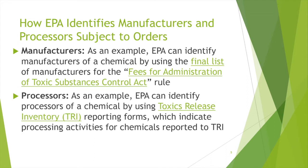For manufacturers, as an example, EPA can identify manufacturers of a chemical by using the final list of manufacturers for the Fees for Administration of Toxic Substances Control Act rule. For processors, as an example, EPA can identify processors of a chemical by using Toxics Release Inventory reporting forms, which indicate processing activities for chemicals reported to TRI. For example, an order issued prior to July 1, 2021 — the deadline for 2020 TRI data — would use 2019 TRI data, it being the most recent set of available TRI data. Note that companies who indicated process impurity as their sole processing activity to TRI would not be subject to orders.